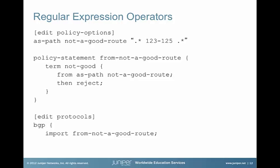Our second example is similar but a little different — we have a wildcard match including a range of 123 through 125. Remember, that means 123, 124, or 125 are anywhere in the ASPath. Here's our policy: if it's from AS path 'not a good route', then reject — meaning we're dropping those routes. We again apply that as an import policy under BGP.